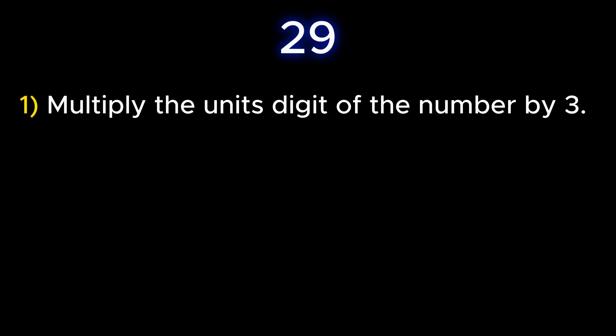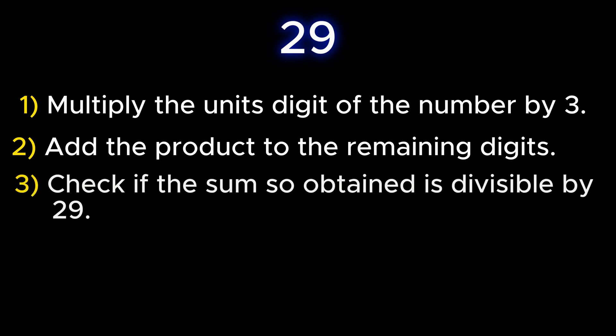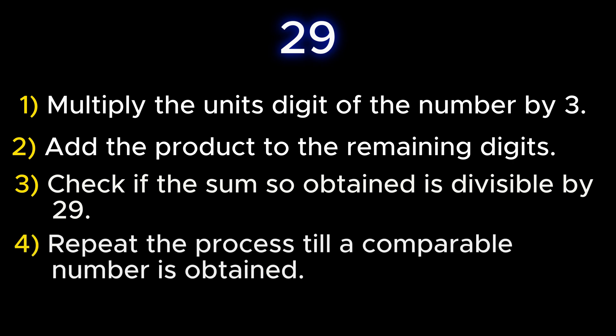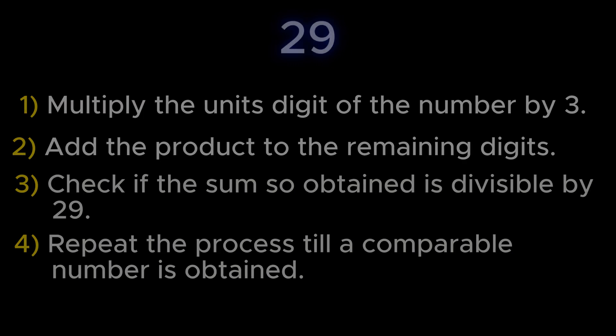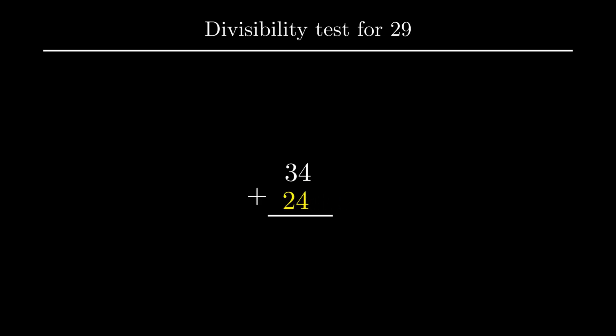Moving on to the next prime number, that is number 29. To check whether a number is divisible by 29, multiply the units digit by 3 and add it to the remaining digits. If the sum is divisible by 29, the given number is also divisible by 29; repeat until a comparable number is obtained. Consider the number 3335. The units digit 5 is multiplied by 3, giving 15, which is added to 333, giving 348. Repeating: 8 × 3 = 24, added to 34, gives 58. Further, 8 × 3 = 24, added to 5, gives 29. Since 29 is divisible by 29, the given number is also divisible by 29.